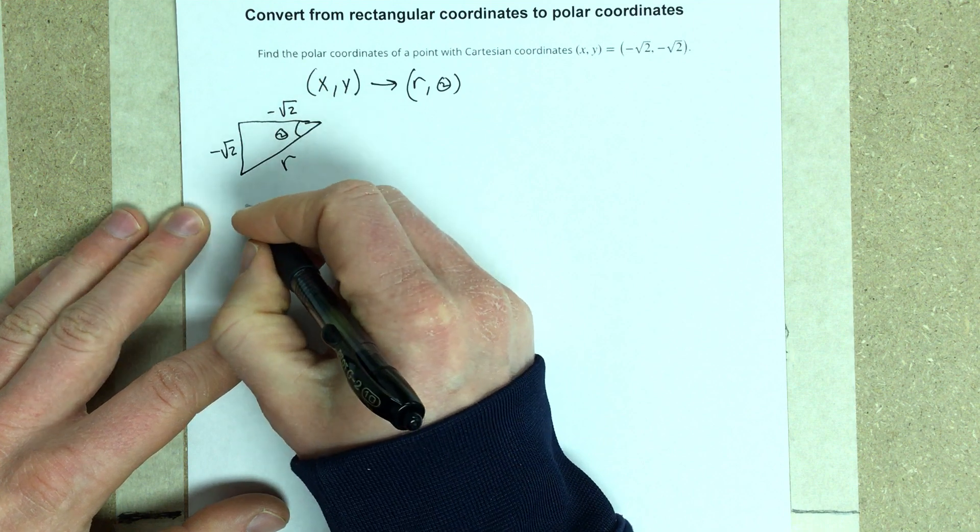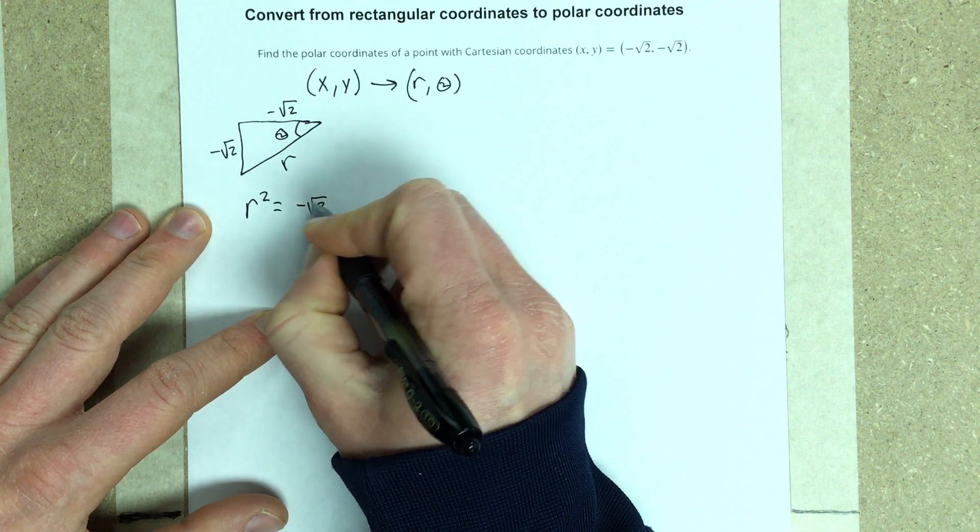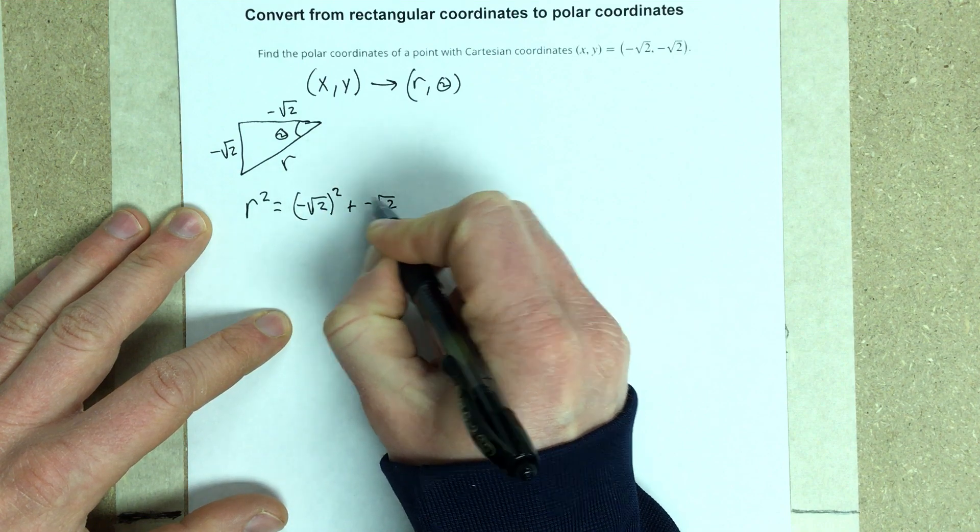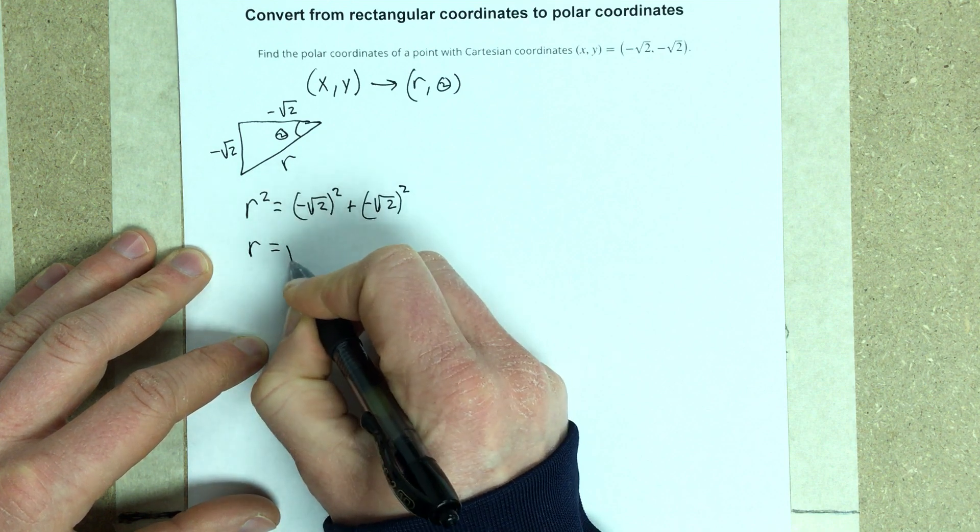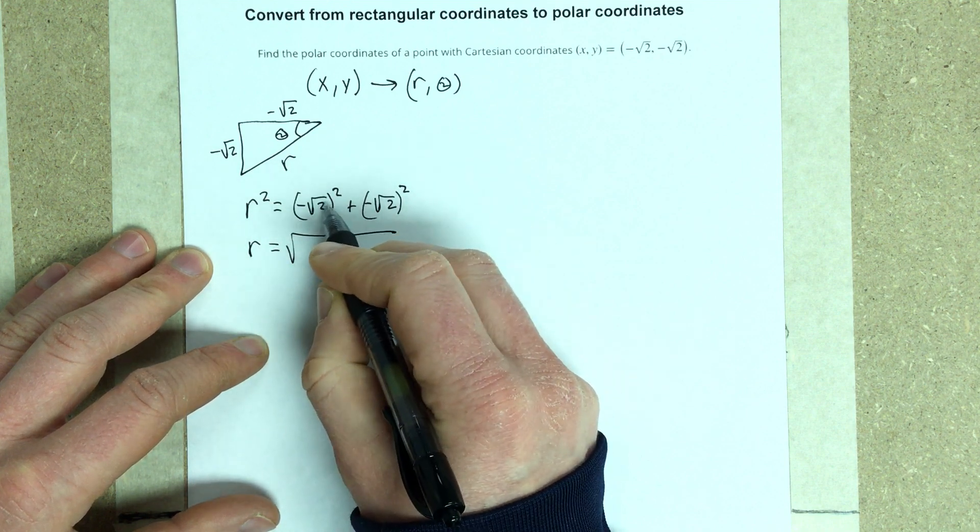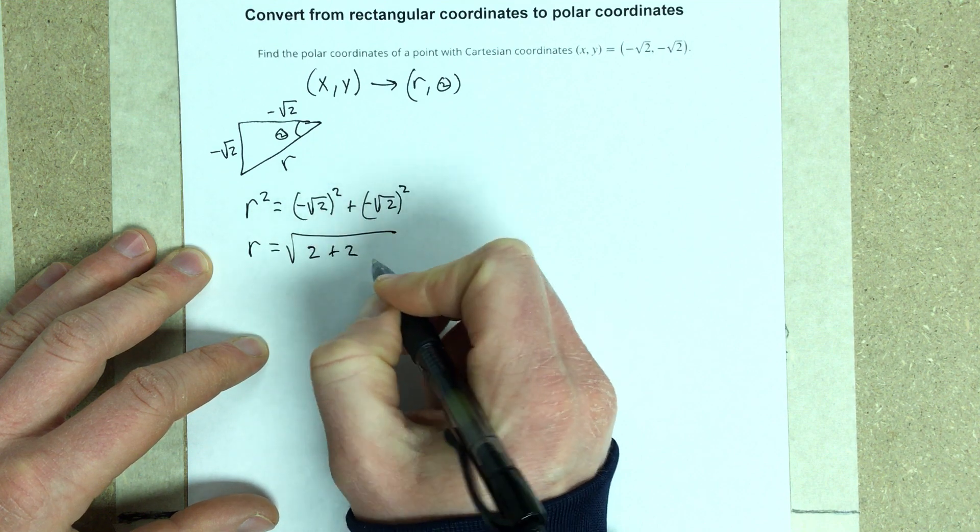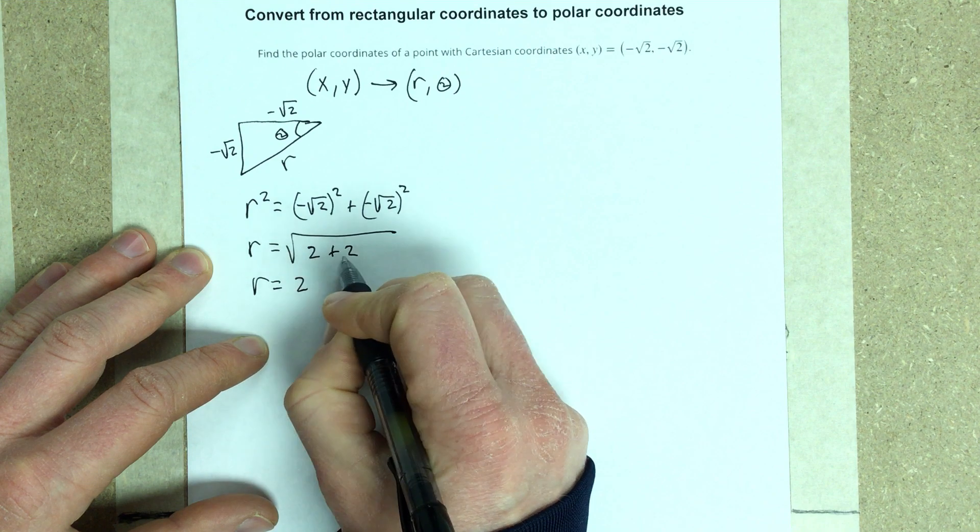To find r, that's pretty easy. We can use the Pythagorean Theorem. So I get negative root 2 squared plus negative root 2 squared. So I get r is equal to the square root. I'm going to take the square root of each side. If I square this piece, I get 2 plus 2. So I end up with r is 2 when I take the root of 4 there.